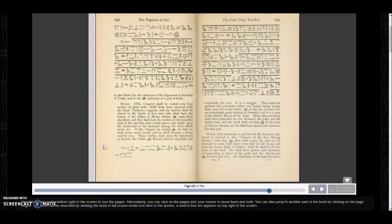And it says, Thou shalt not perform this ceremony before any human being except thy own self, or thy father, or thy son, because it is an exceedingly great mystery of Amentet, and it is a type of the hidden things of the Tuat. When this ceremony hath been performed for the deceased the gods, and the spirit souls, and the dead shall see him in the form of Kenti Amenti, and he shall have the power and dominion, like this god.